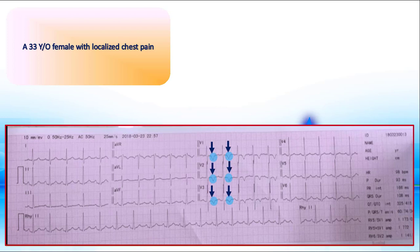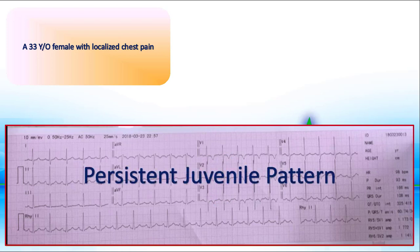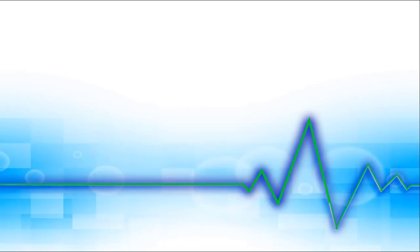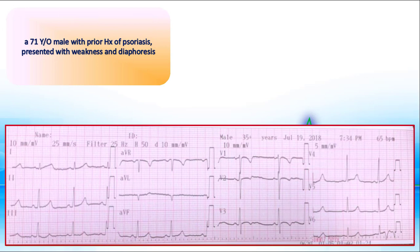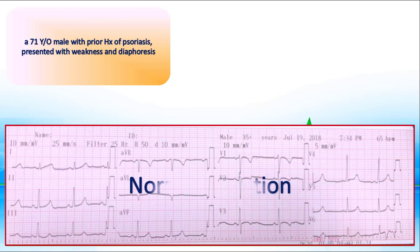The next electrocardiogram is from a 33-year-old female with localized chest pain. There are shallow T inversions in V1 to V3 — this pattern is called persistent juvenile T wave inversion. Our last EKG is from a 71-year-old male with prior history of psoriasis, presenting with weakness and diaphoresis. There are shallow T inversions in V1 to V3 due to normal variation. Remember that persistent juvenile patterns often disappear after age 40, so these precordial T inversions are not due to juvenile pattern.